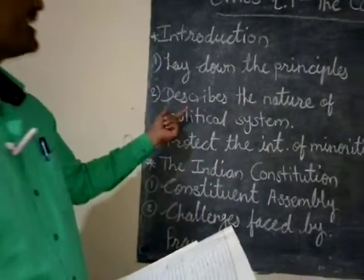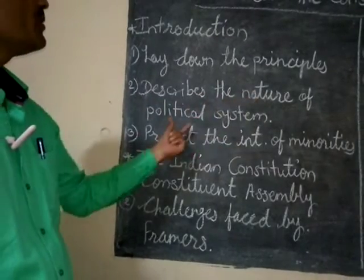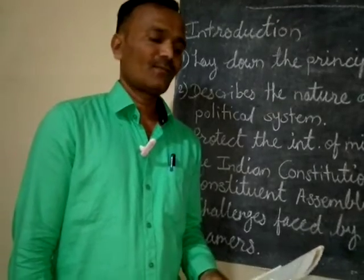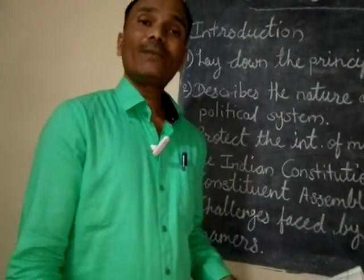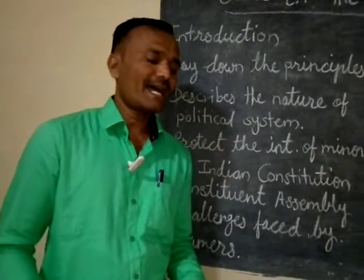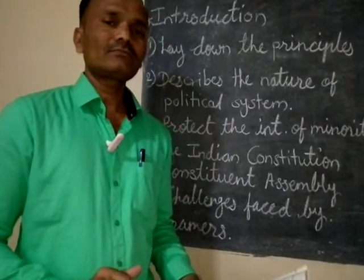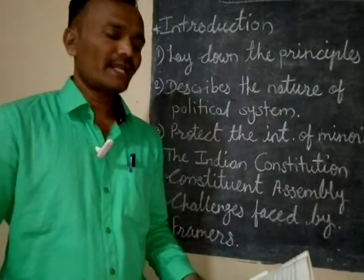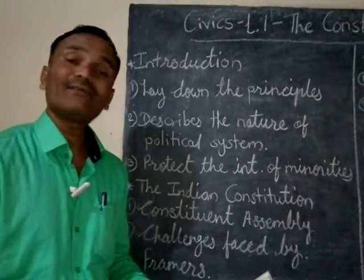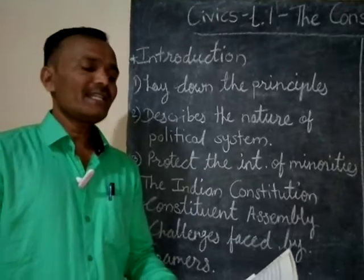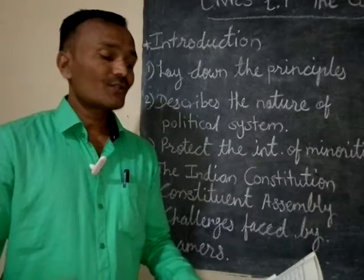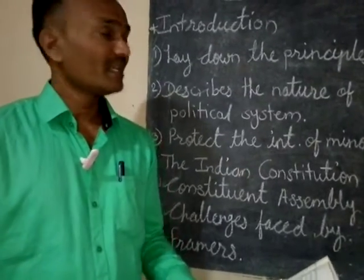The second point is that the constitution describes the nature of the political system — what type of government there should be. For example, Nepal earlier was a monarchy where the whole and sole decision-making power was in the hands of the king. However, in a democratic setup the constitution plays a very important role, laying down guidelines for the selection of representatives and distribution of powers.